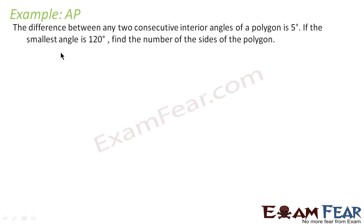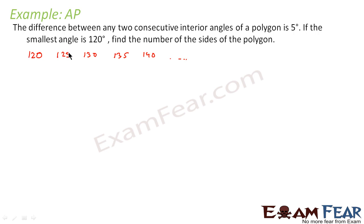In this example, we are told that the difference between any two consecutive interior angles of a polygon is 5 degrees, and the smallest angle is 120 degrees. We have to find the number of sides of the polygon. The angles form an AP where a equals 120 and d equals 5. We do not know n, the number of sides.